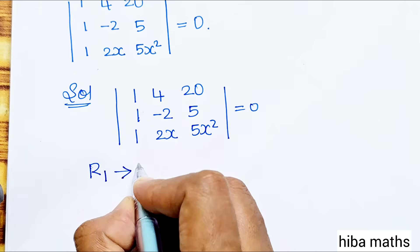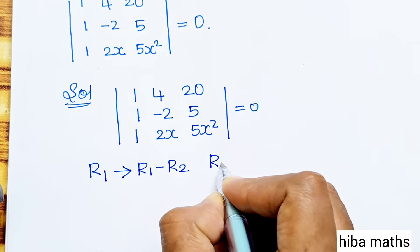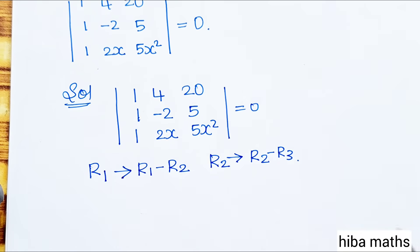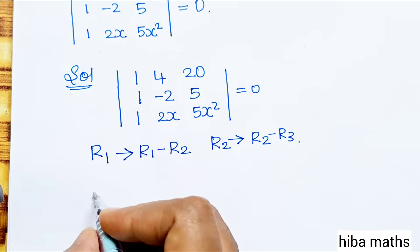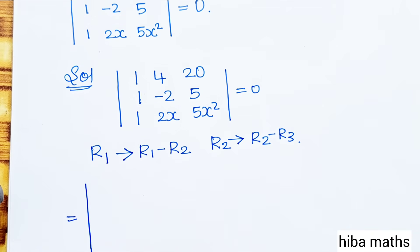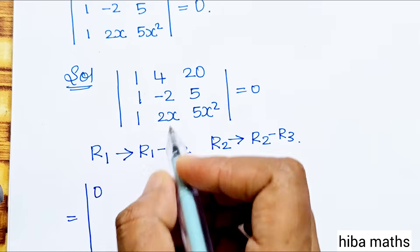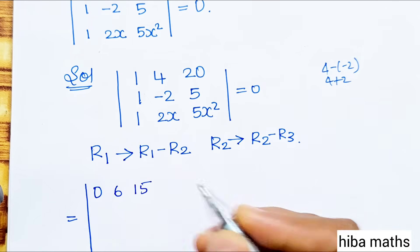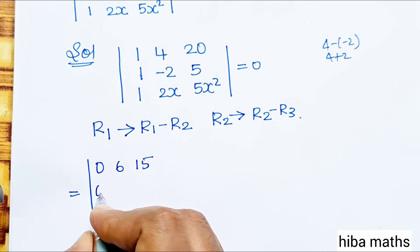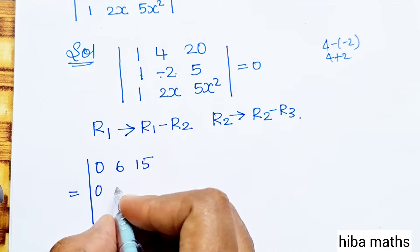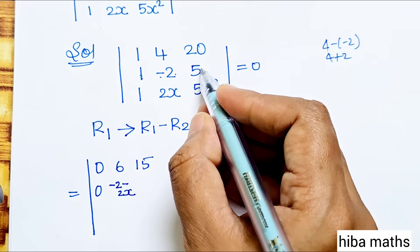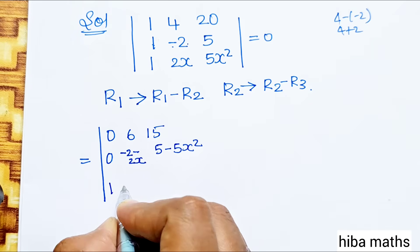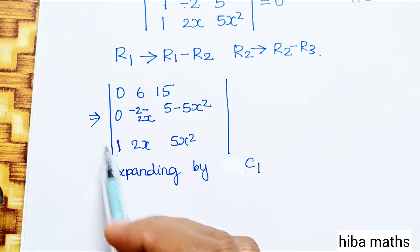To simplify, apply row operations: R1 → R1 − R2 and R2 → R2 − R3. For R1: 1−1=0, 4−(−2)=6, 20−5=15. For R2: 1−1=0, −2−2x, 5−5x². R3 stays: 1, 2x, 5x².